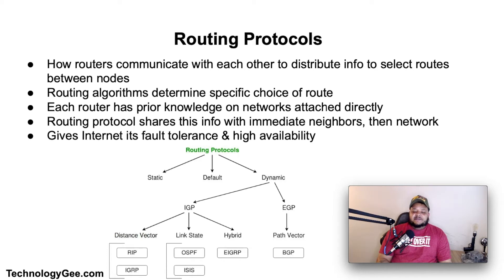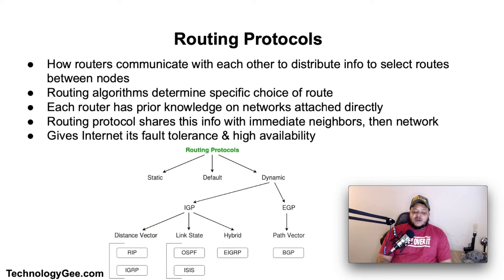Let's talk about routing protocols. A routing protocol specifies how routers communicate with each other to distribute information that enables them to select routes between nodes on a computer network. Routers perform the traffic directing functions on the internet — data packets are forwarded through the networks of the internet from router to router until they reach their destination computer. Routing algorithms determine the specific choice of route.